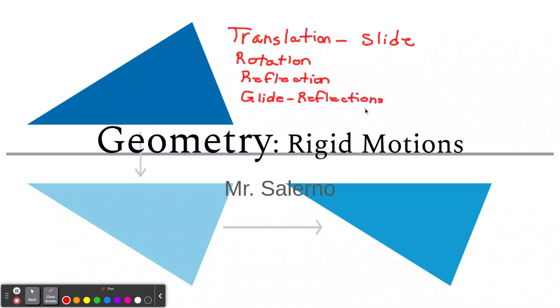Now it does not include dilation, which you may have heard about with transformations. Because dilation is a little different. The thing about rigid motions is it preserves the shape and size. Dilation doesn't do that. So again, no dilation with rigid motions.